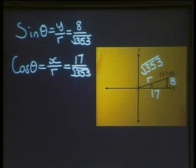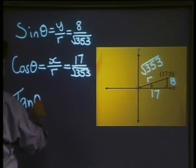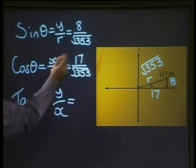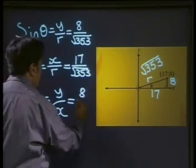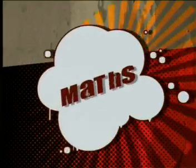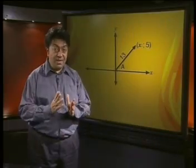And our third ratio, good old tan. Tan of theta is equal to y over x, or y divided by x. y is equal to 8, and x is equal to 17. Are you ready for some more?